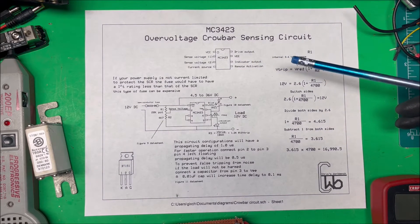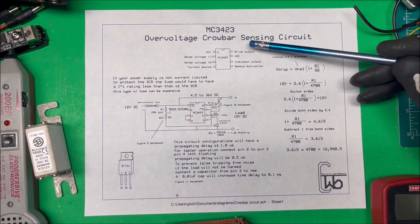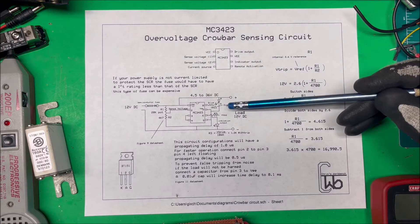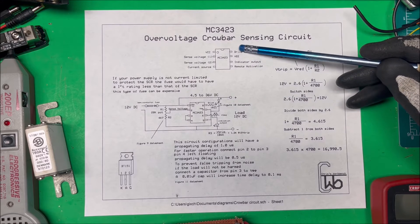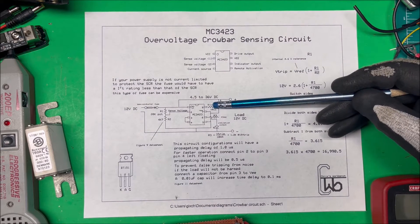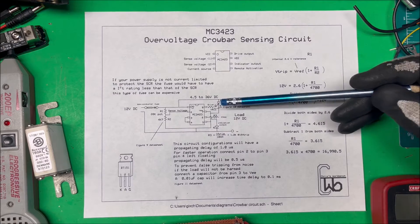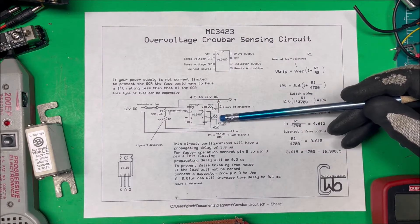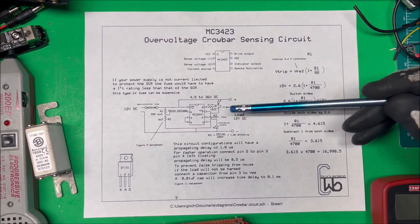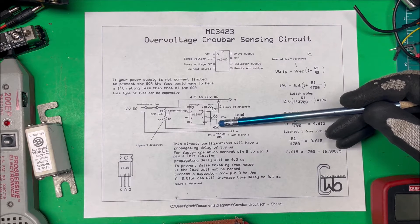The drive output: if you look in the datasheet on figure 10, it'll show you the resistance you need for the drive circuit. In this case it's 10 ohms going into my SCR here.